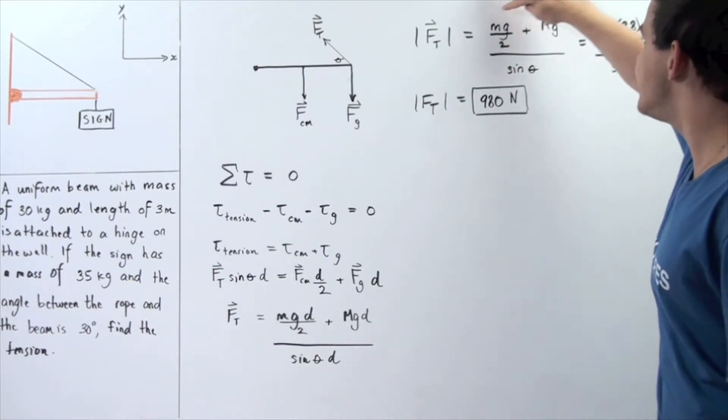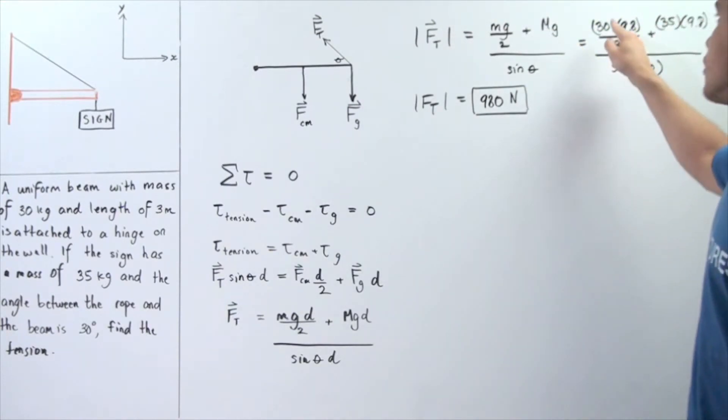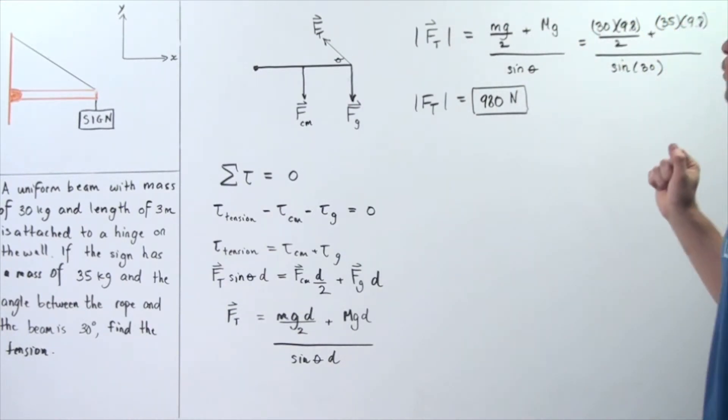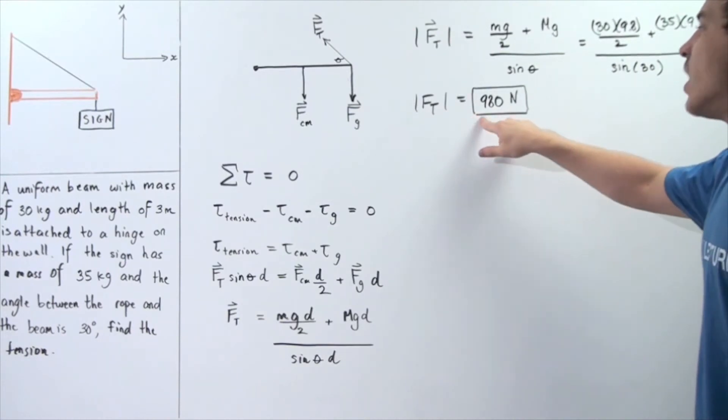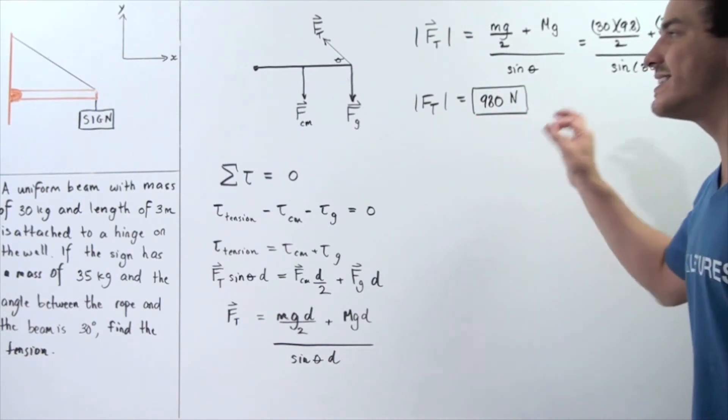Note that these m's are not the same. This m is 30 kilograms, while the capital M is 35 kilograms. So we multiply both by 9.8, we divide this quantity by 2, we take the sum and we divide by sine 30 or 0.5. And we get 980 newtons is the tension in our rope.